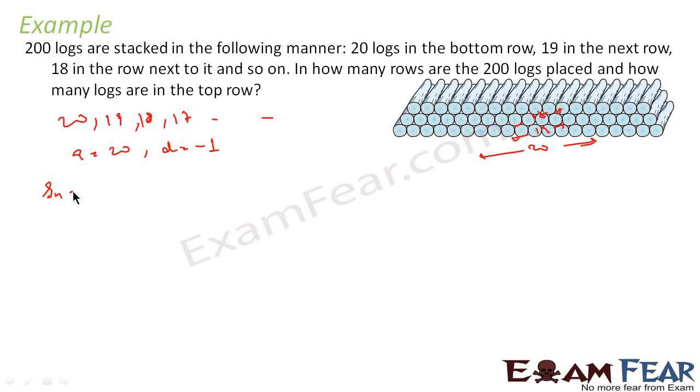So S_n is nothing but n/2 times (2a + (n-1)d). So 200 equals, we don't know n, n/2 times (20 + (n-1) times minus 1).